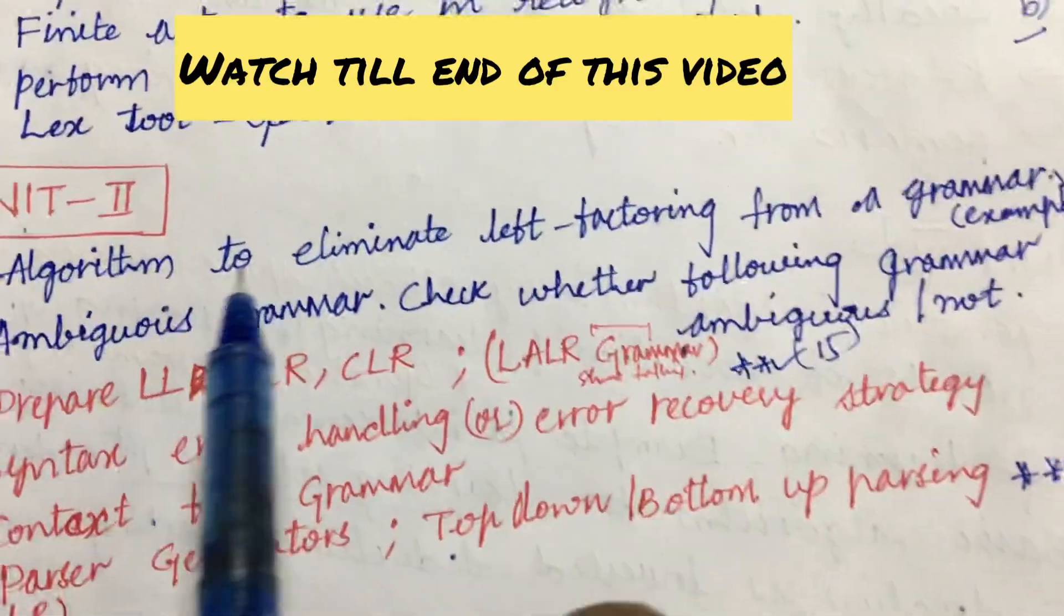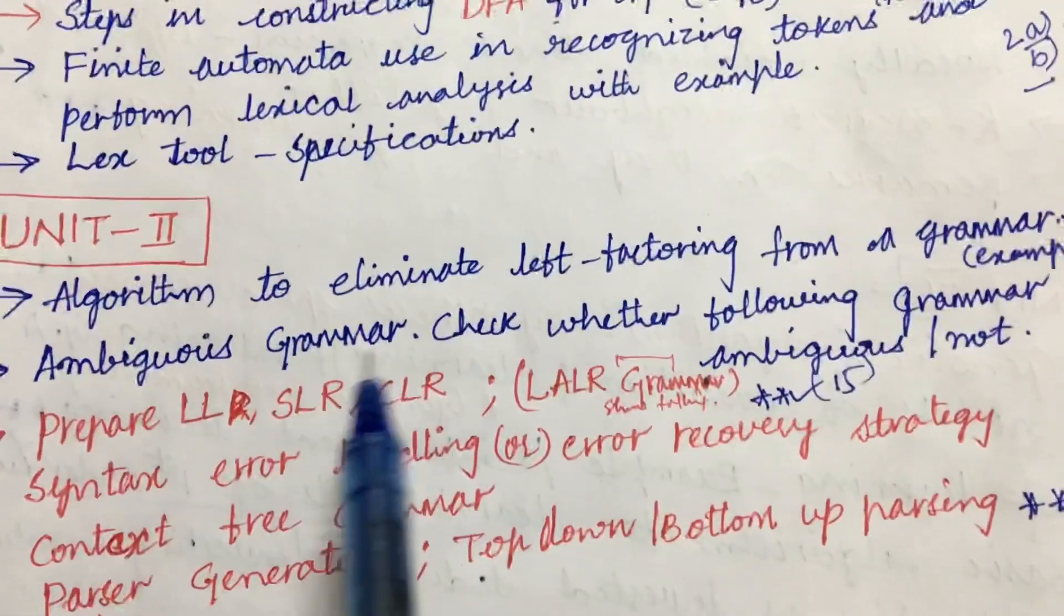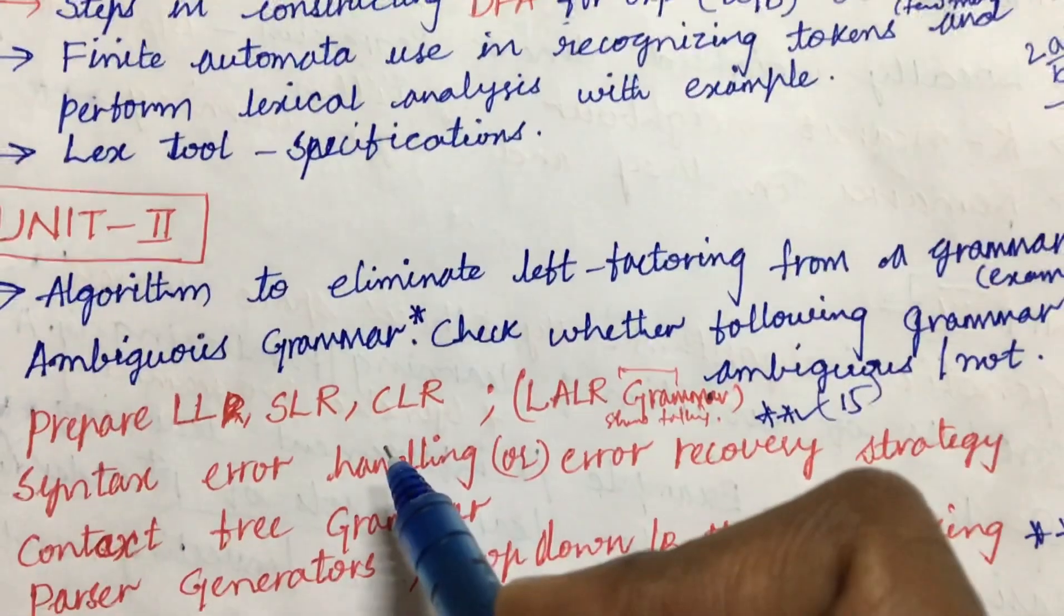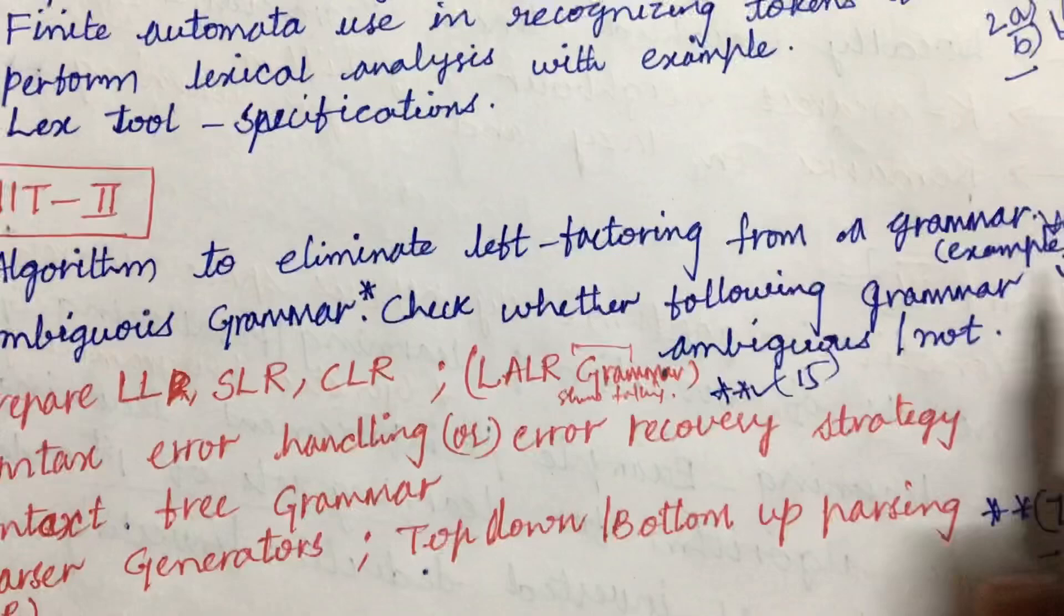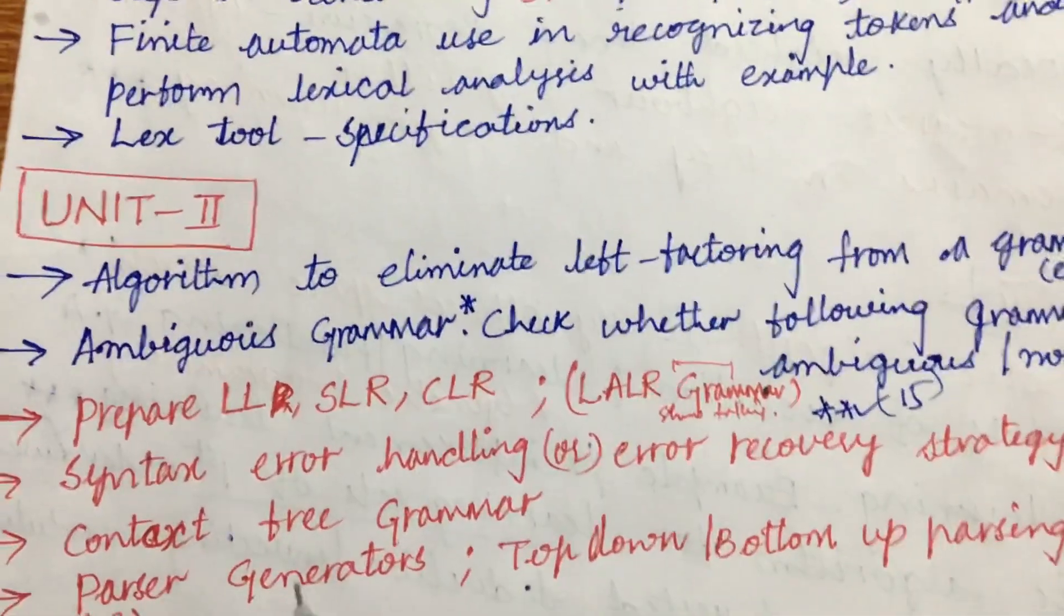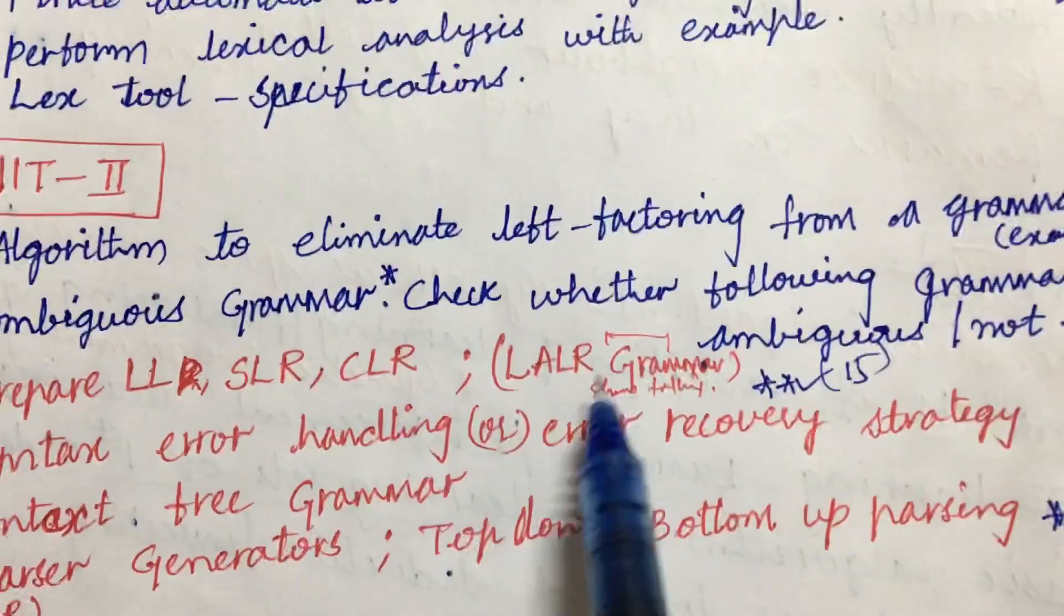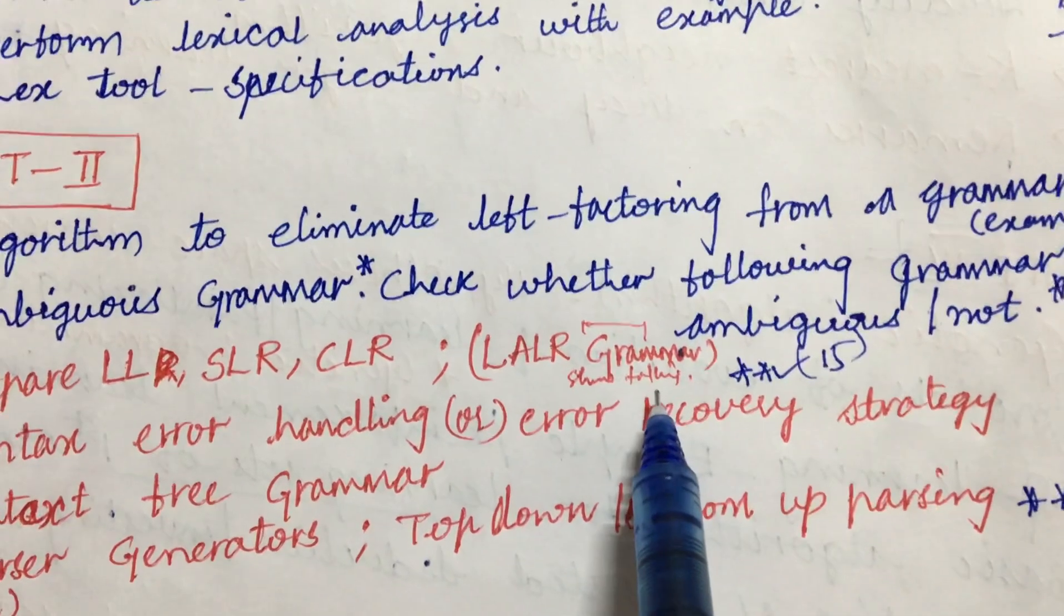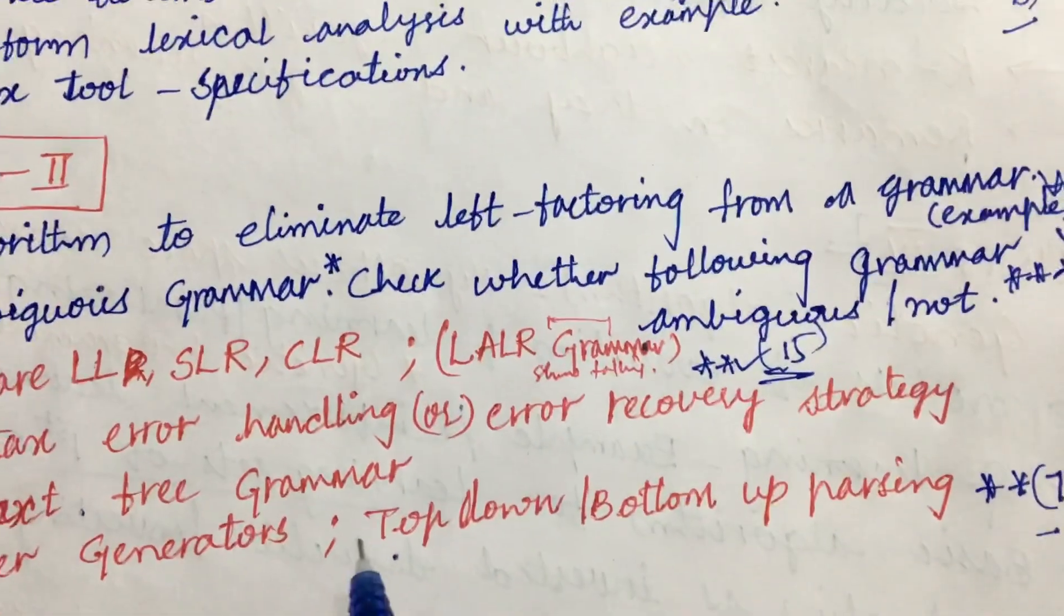Later, Unit 2 is all about the algorithm to eliminate left factoring for a grammar, and ambiguous grammar is asked several times. We can expect this to be a gunshot question where they are going to ask you to check whether the following grammar is ambiguous or not - one of the very important and gunshot questions. Dear students, prepare LL, SLR, CLR, or LALR grammar. They're going to give you a certain grammar and ask you to check whether it is a correct statement or not. It is asked several times - direct 15-mark question, dear students, related to grammar check.